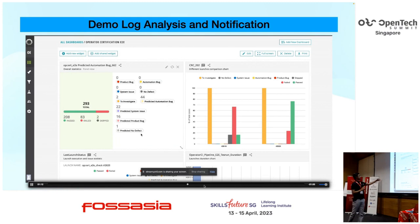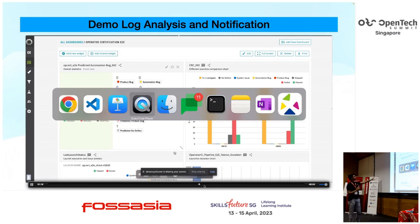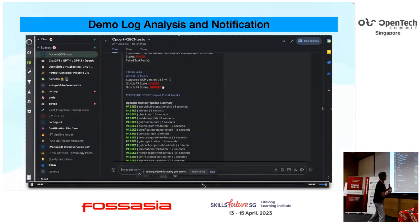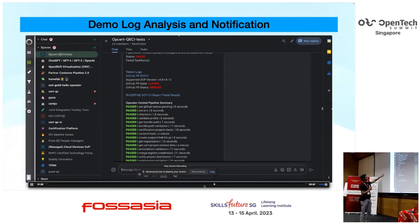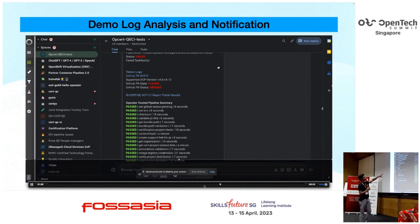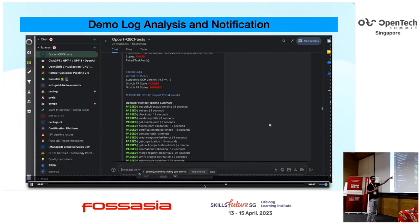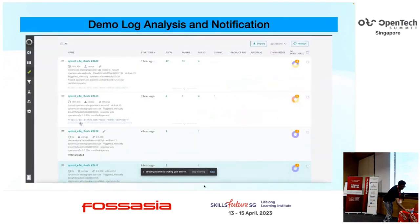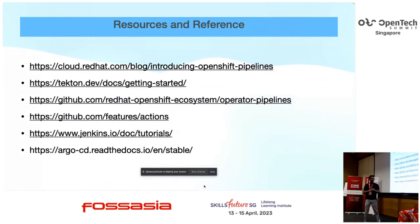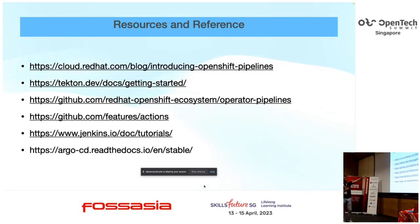You can see the dashboard which shows predictions of the test run. You can also see the Google Chat notifications we've customized, which have information from the Tekton logs. You can directly navigate to the Tekton dashboard as well as the Report Portal log instance from there. These are the resources and references you can refer to for Tekton OpenShift Pipelines. We have our project operator pipelines on GitHub from where you can take reference, and there are also tutorials on Jenkins and other CI tools like GitHub Actions.